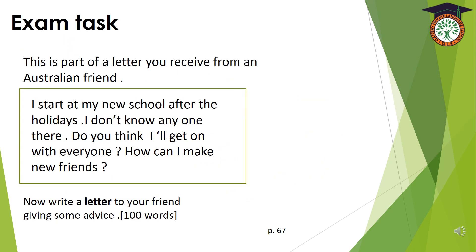Dear students, here it's your turn. You are going to write an informal letter concerning the exam task. This is part of a letter you receive from an Australian friend: 'I started my new school after the holidays. I don't know anyone there. Do you think I will get on with everyone? How can I make new friends?' You are going to write a letter to your friend giving some advice, in 100 words. This exam task is in your Close-Up course book, page 67.